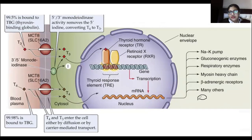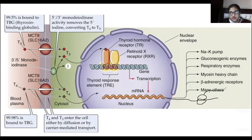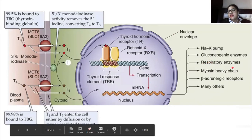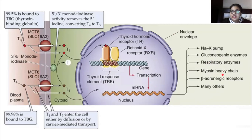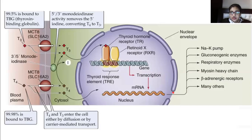The mRNA goes to ribosomes on the rough endoplasmic reticulum or in the cytosol. A chain of amino acids combines together forming peptide bonds, producing polypeptide chains and proteins. These proteins include enzymes, myosin heavy chain, and receptors — produced in response to transcription of the gene. The main function of the thyroid gland is to enhance metabolism.